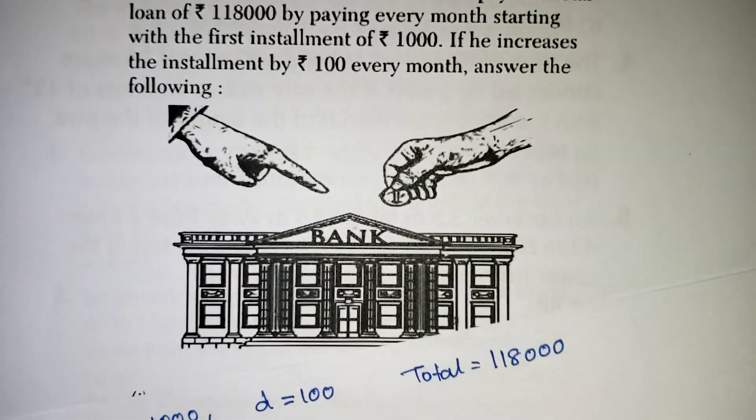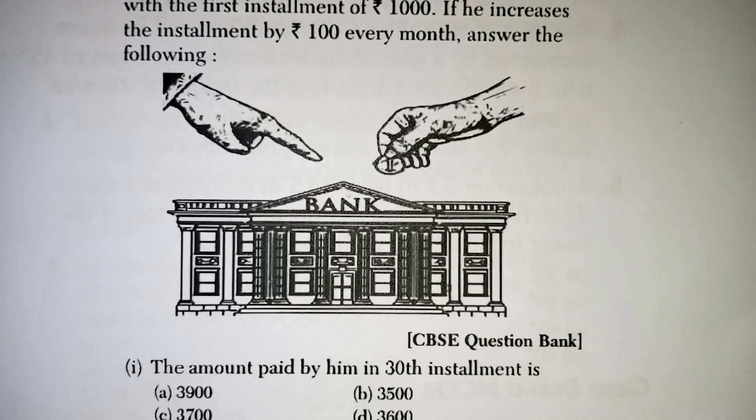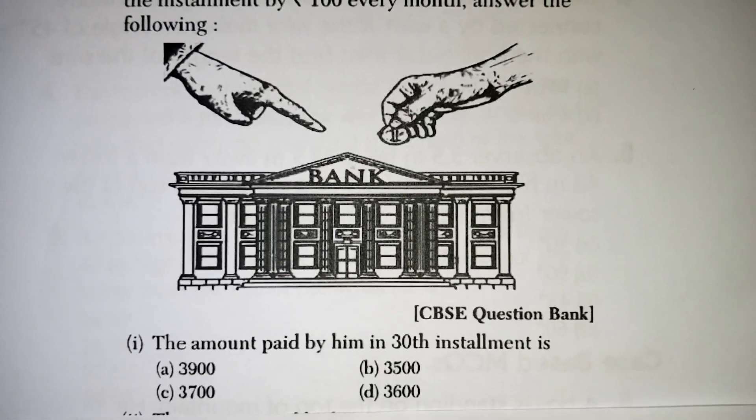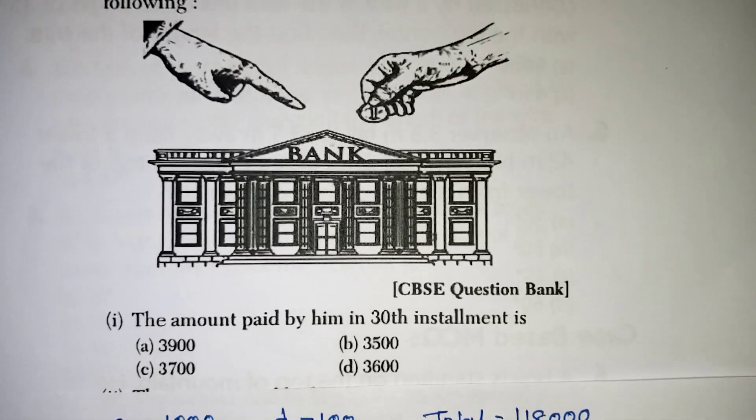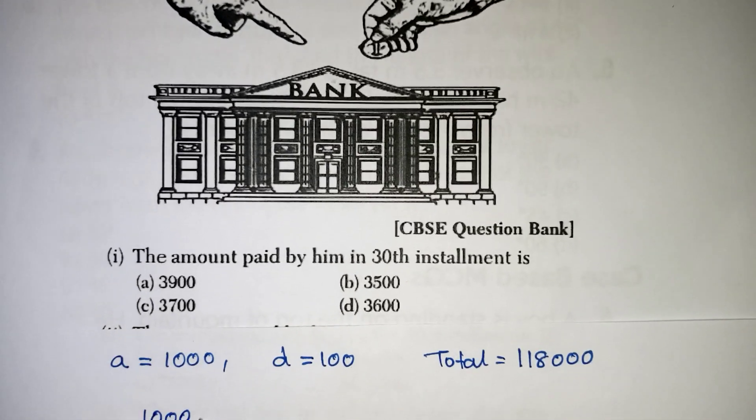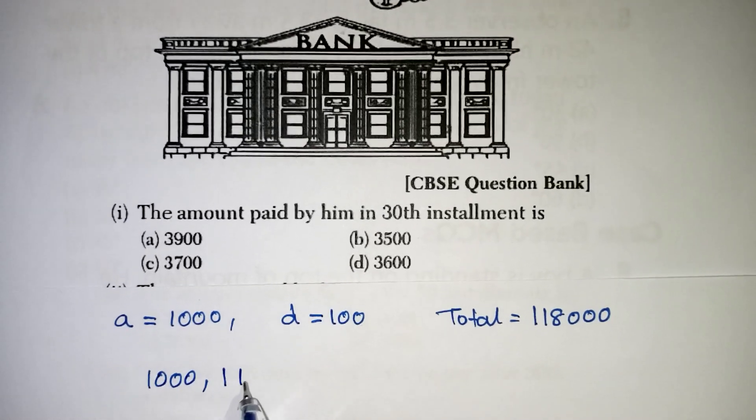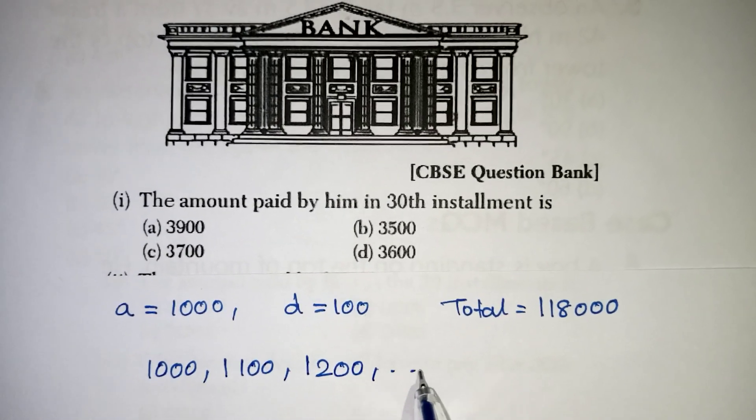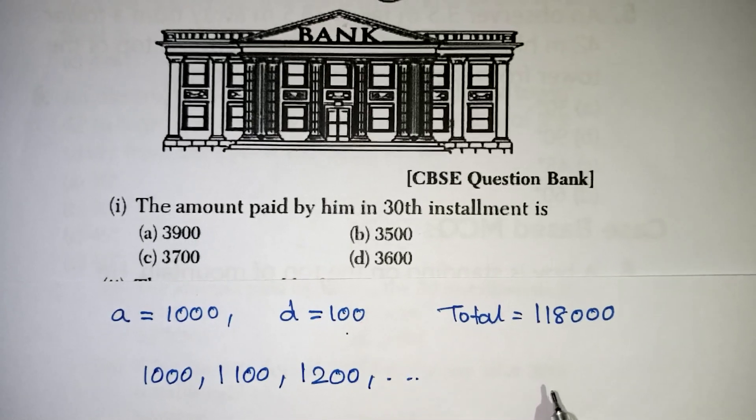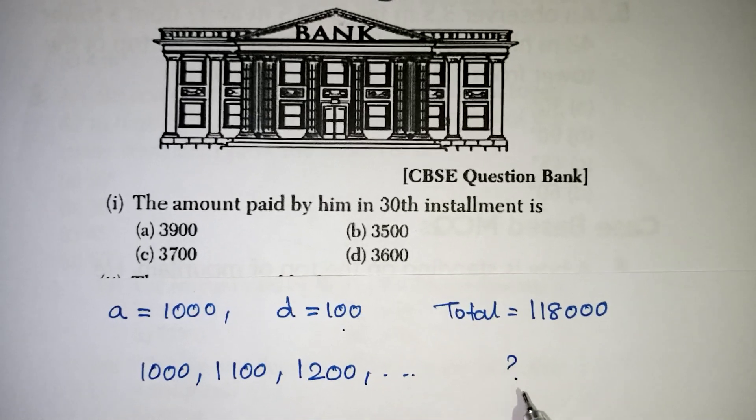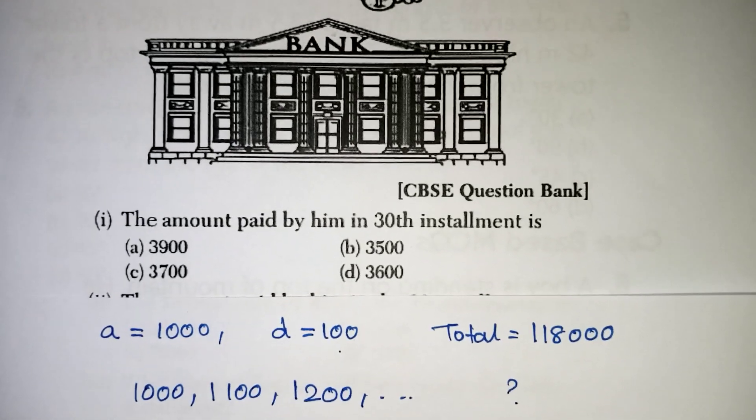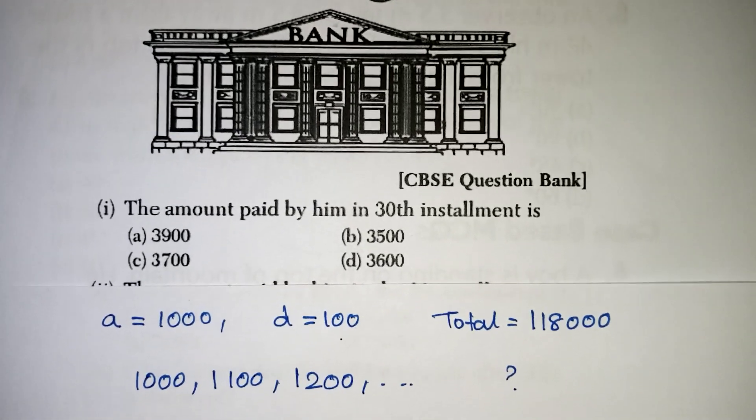Look at the first question. The total amount paid in the 30th installment. So, the first installment amount is Rs. 1000 and the next month will be Rs. 1100. Next will be Rs. 1200 because every month is increasing Rs. 100. Then what will be the 30th month amount they are asking. So, that is understood A30 they are asking.